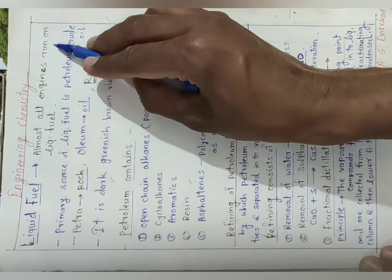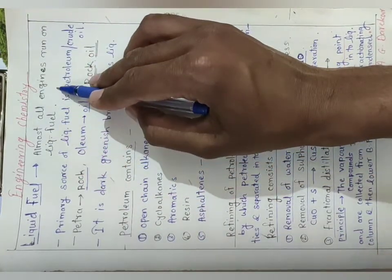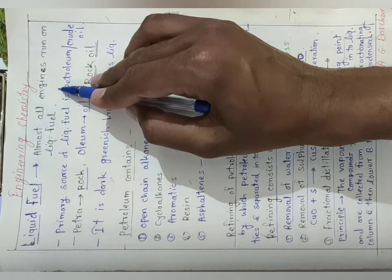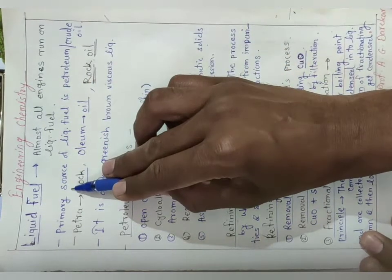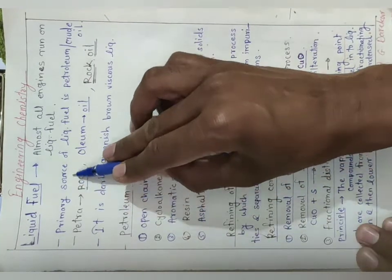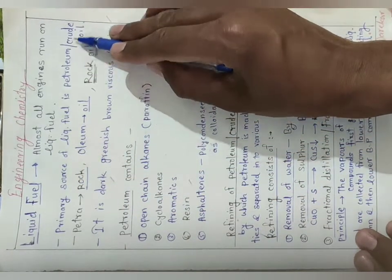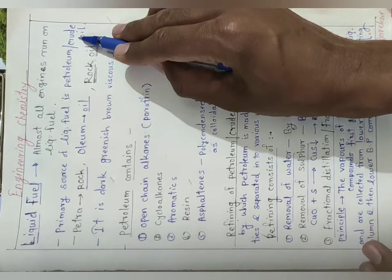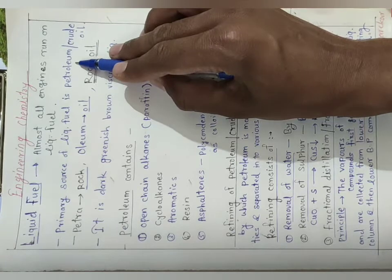Almost all engines run on liquid fuel. Liquid fuel is used as a source of energy in almost all engines. Now here we will see primary source of liquid fuel. The primary source of liquid fuel is petroleum or crude oil, which occurs in earth crust. So petroleum is a fossil fuel.